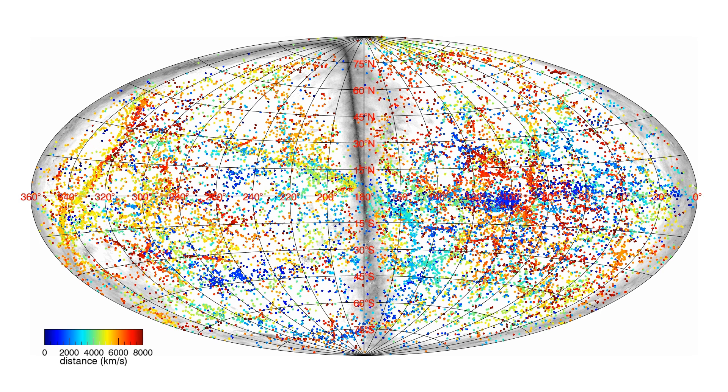We start our adventure with a view of the projection of all galaxies within 8,000 km per second in the V8K Redshift Catalogue. The projection is in supergalactic coordinates, with the plane of the Milky Way slanting at a steep angle across the center and wrapping around the edges.